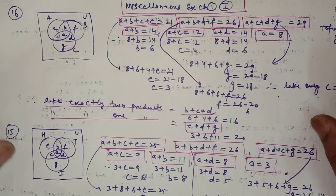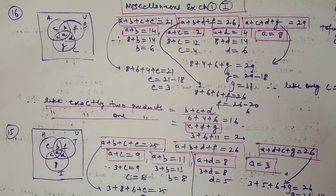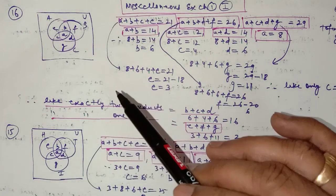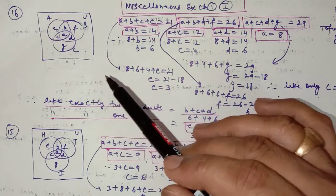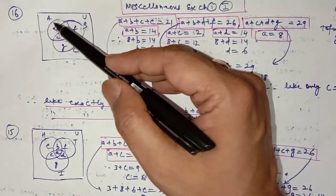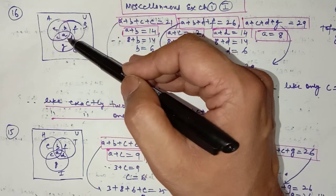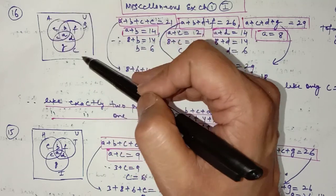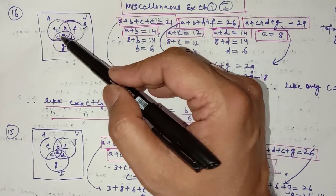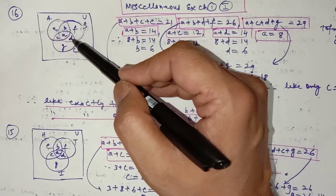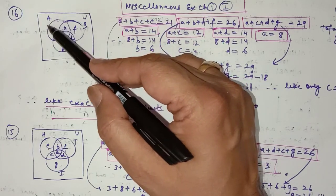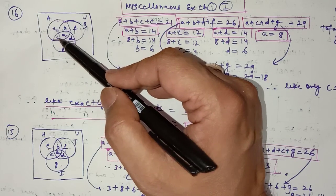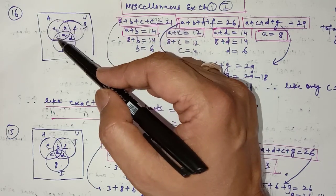In question number 16, it is given that in a survey it was found that 21 people like product A, 26 like product B, and 29 like product C. So there are three sets: set A, set B, and set C. You know how to draw three sets in a Venn diagram and how many parts we have — a, b, c, d, e, f, g — marked accordingly. The circle for set A denotes the number of persons who like product A, that is a + b + c + e.